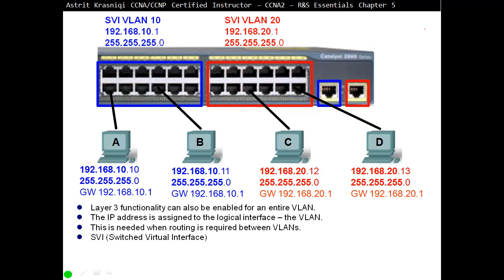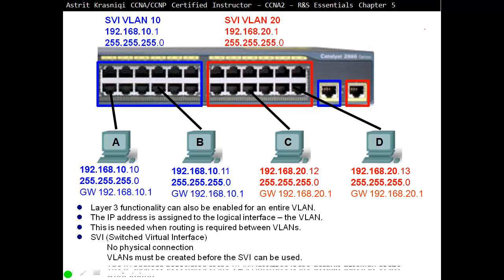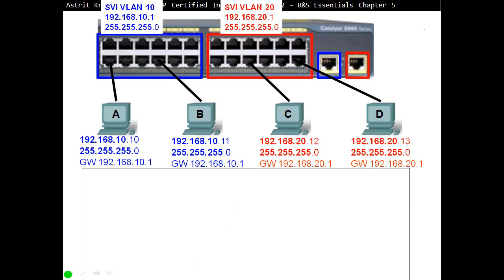SVI — Switch Virtual Interface — has no physical connection. The VLAN must be created before the SVI can be used. The IP address associated with the VLAN interface is the default gateway for workstations. For example, we create an SVI for VLAN 10 and an SVI for VLAN 20, so all devices in those VLANs will use their respective SVI as their gateway.